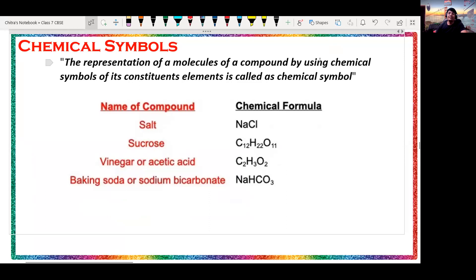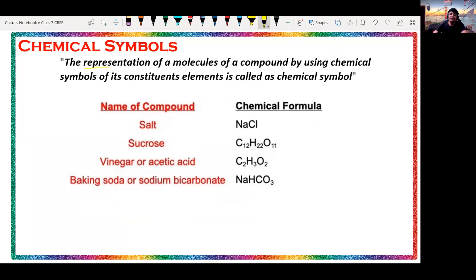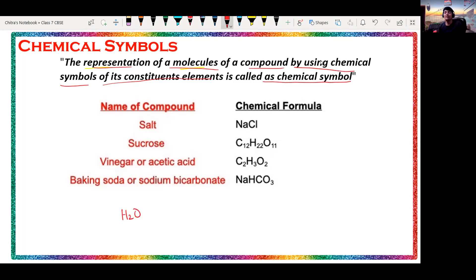Now we will understand chemical symbols. Chemical symbols are nothing but the representation of a molecule of a compound by using chemical symbols of its constituent elements. For example, if you want to represent water in the form of a chemical symbol, you use H2O.